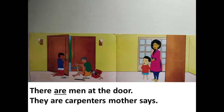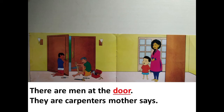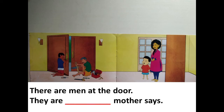There are men at the — where are the men? In the picture, there are men at the door. They are — who are they? People are working over there. They are carpenters. They are carpenters.